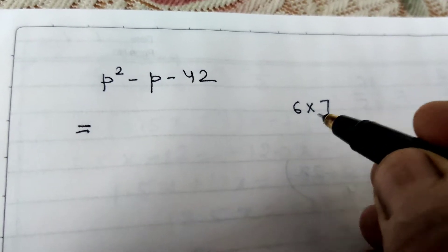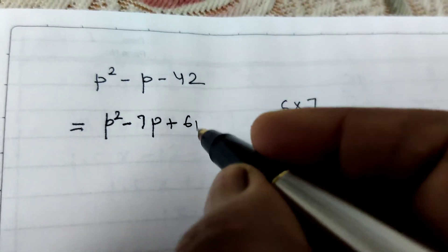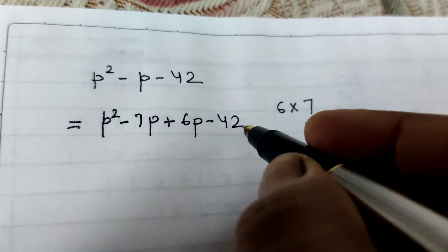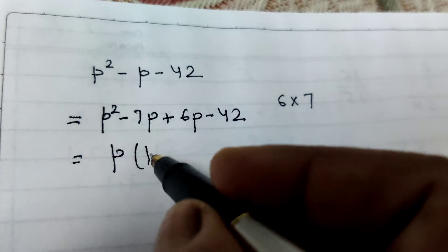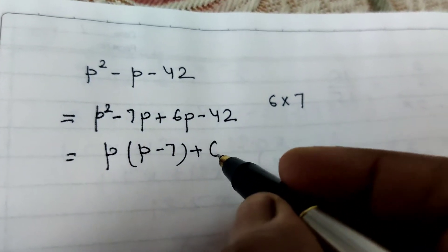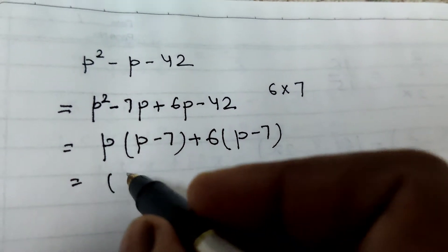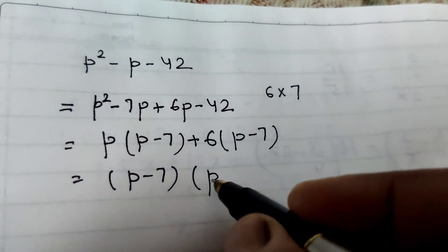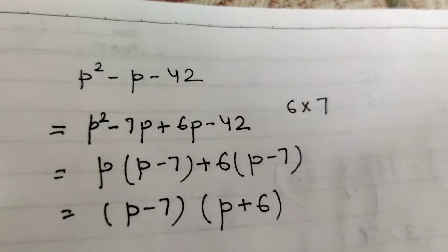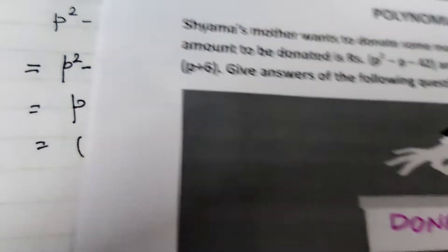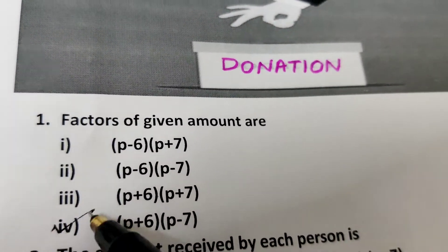We write p squared minus 7p plus 6p minus 42. Taking p common from the first two terms gives p(p minus 7), and taking 6 common from the last two terms gives 6(p minus 7). So the factors are (p minus 7) and (p plus 6). This corresponds to option number 4.